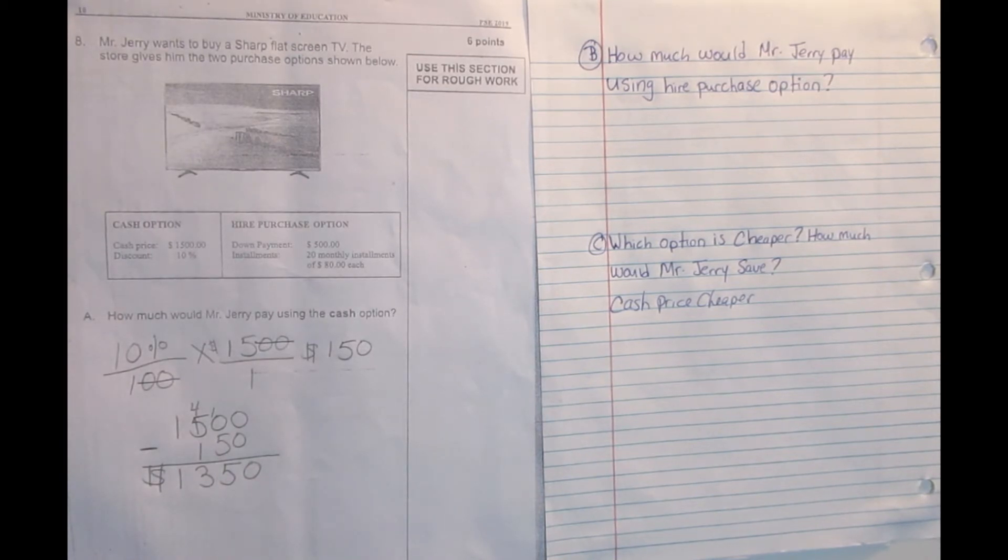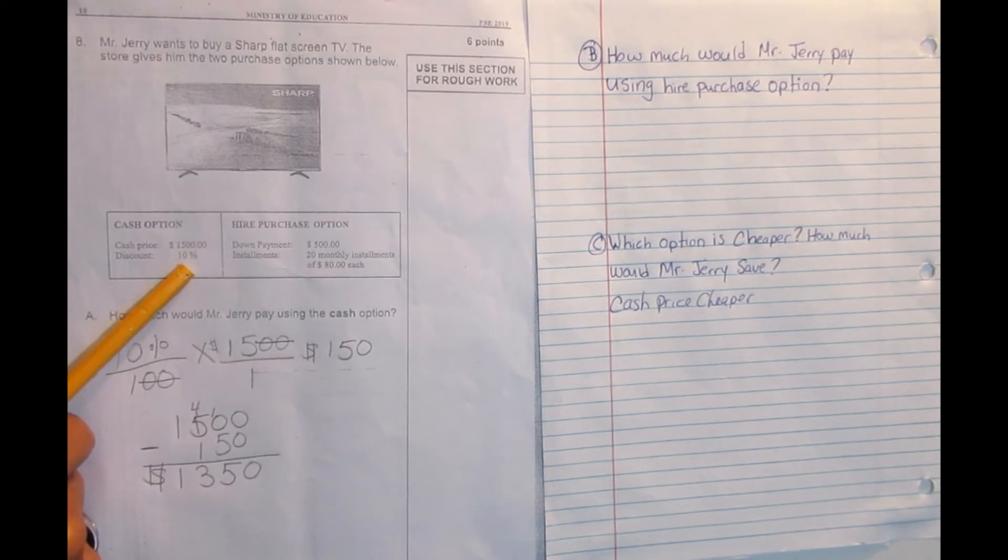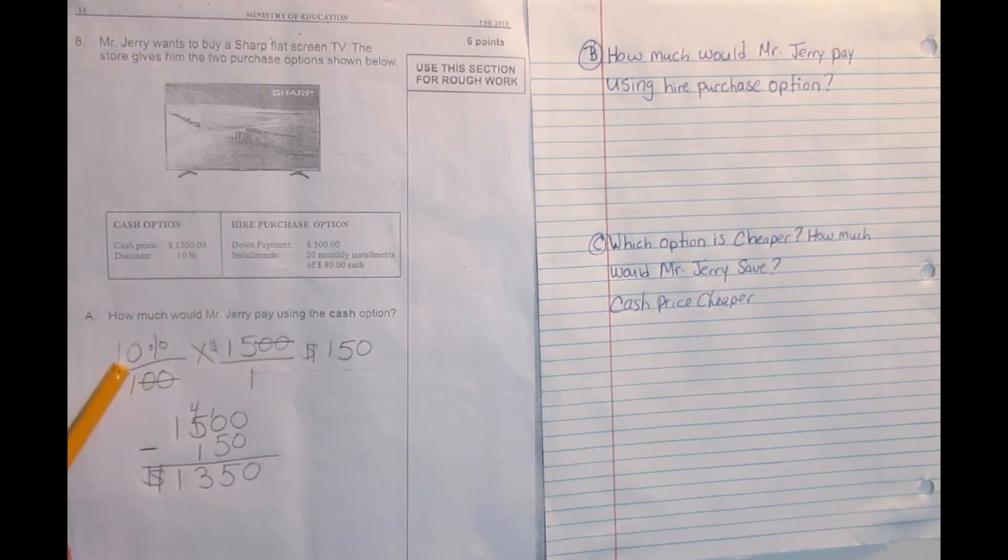And A is solved. Because the person purchased a TV with a cash price, they got ten percent discount. And ten percent of $1,500 is $150. So we minus the $150 from the $1,500, and we got $1,350.